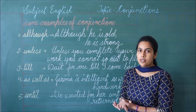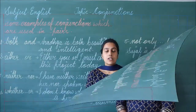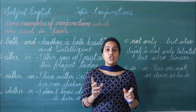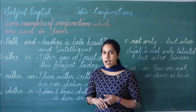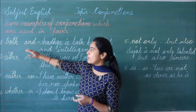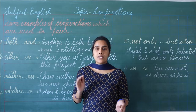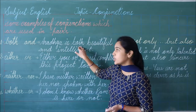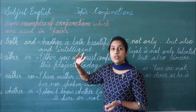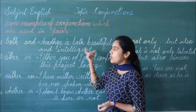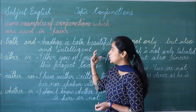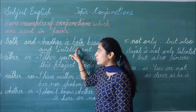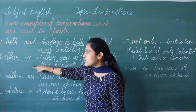Now we shall look at the uses of some conjunctions that are used in pairs. अब हम ऐसे conjunctions के बारे में पढ़ेंगे जो pairs में use होते हैं — मतलब एक के साथ एक use होते हैं. The first one is 'both...and'. Both और and का use एक साथ होता है — अगर आप किसी sentence में 'both' का use कर रहे हैं, तो उसके साथ 'and' का ही use करेंगे. Like: Aradhya is both beautiful and intelligent. अराध्या में दोनों qualities हैं — वो beautiful भी है और intelligent भी है. तो both और and एक साथ use होते हैं.